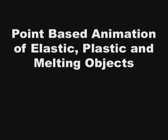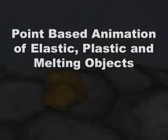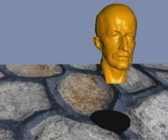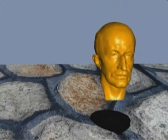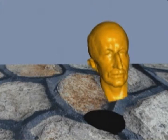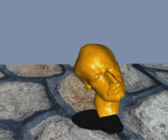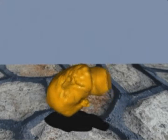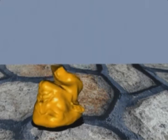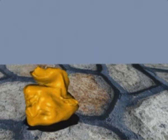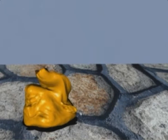In this video, we demonstrate our interactive simulation environment for elastic, plastic, and melting objects. During the simulation, we can change the material parameters on the fly, from stiff elastic to plastic, back to soft elastic, plastic, and back to stiff elastic.